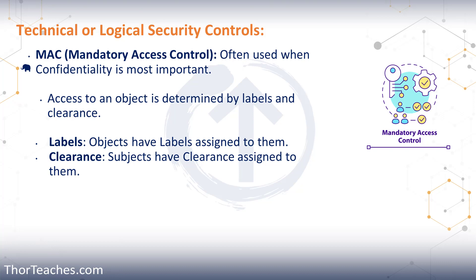Some things can be both subject and object, but not at the same time. The clearance has to be equal to or supersede the label. For example, if we have a program that does our backups — when you go in and configure things, at that point that program is the object being manipulated by you. But at midnight when our backups start, the backup program is now the subject. It goes out and pulls all the data from the servers we're backing up — the servers are the object.